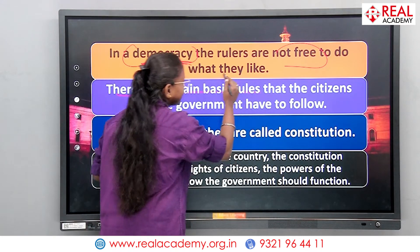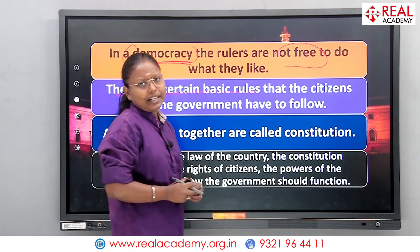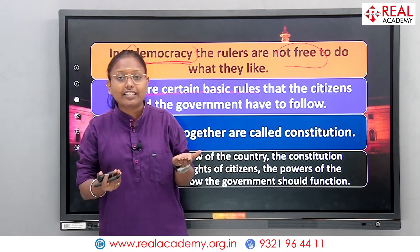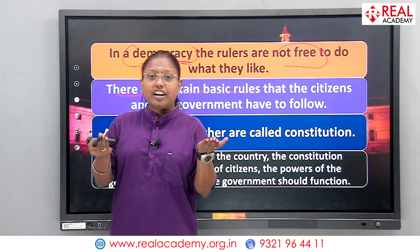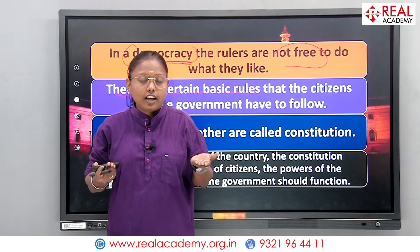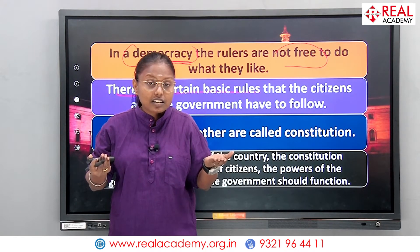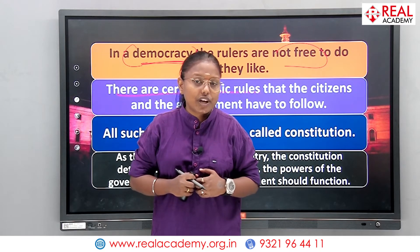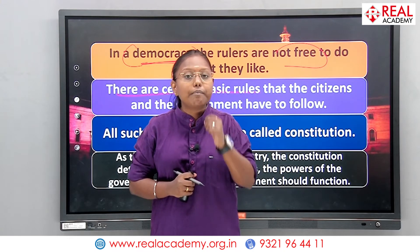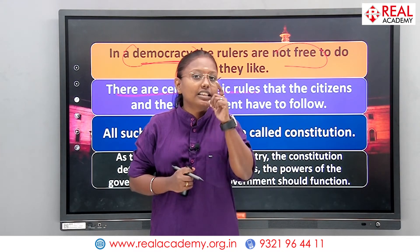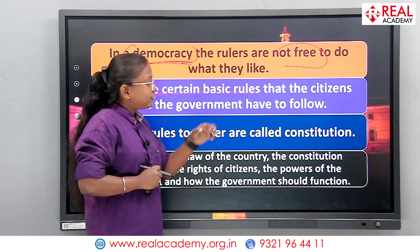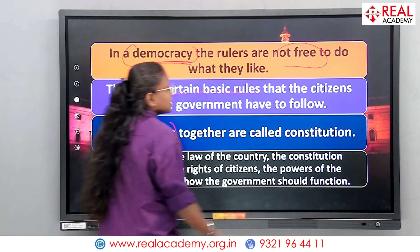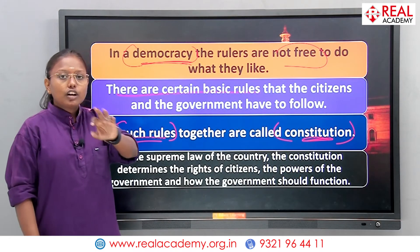There are certain basic rules for citizens and for the government as well — both have to be balanced. When both are getting imbalanced, the nation faces traumatic situations. Democracy is all about balancing the pattern. To make the democratic procedure more successful, you have to balance between citizens and the government. Such rules are considered to be a constitution — simple as a fundamental concept: do's and don'ts for the citizens of the nation.